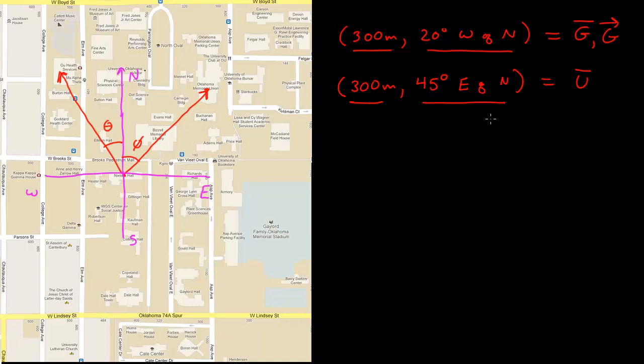If this is the vector that gets me to the Union, I might give it the symbol U with a line over it. So you ask the question, is the vector G equal to the vector U? And the answer is no. Even though they're the same magnitude, they are different directions, and so they do not represent the same vector.